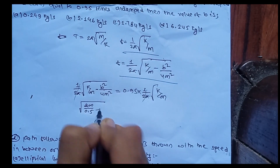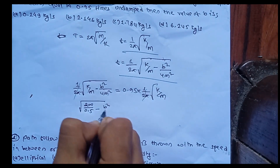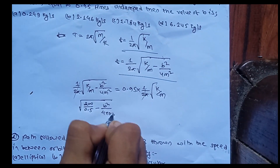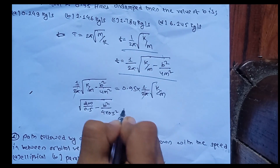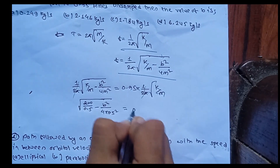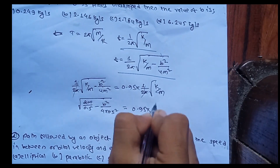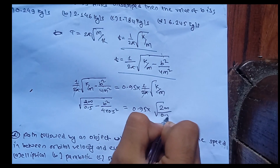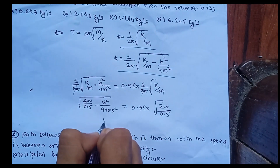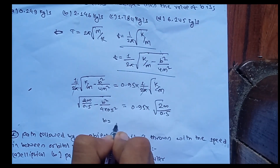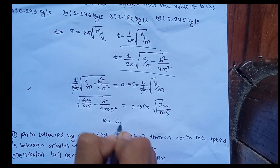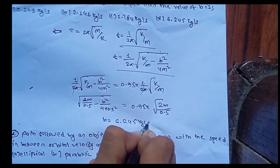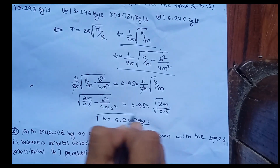Substituting: sqrt(200/0.5 - b²/(4 × 0.5²)) = 0.95 × sqrt(200/0.5). Solving this gives b approximately equal to 6.245 kg per second.